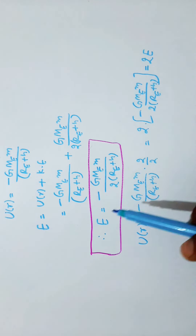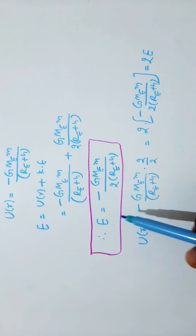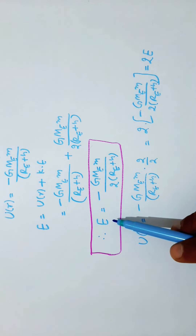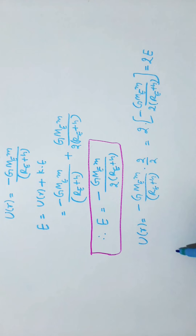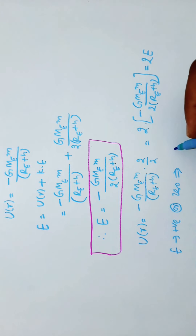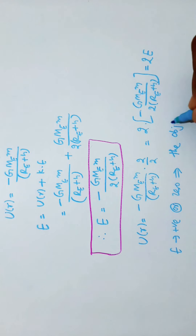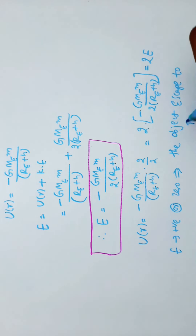Both potential energy and total energy are negative values. If total energy were greater than or equal to zero, the object would escape to infinity. But satellites are at a finite height, so total energy E must be negative.